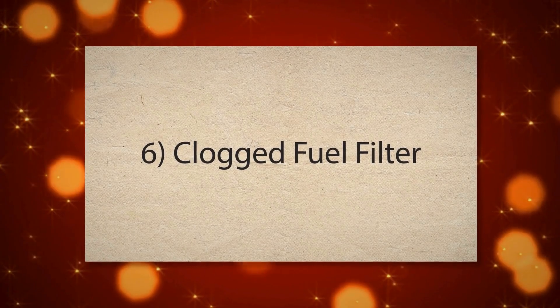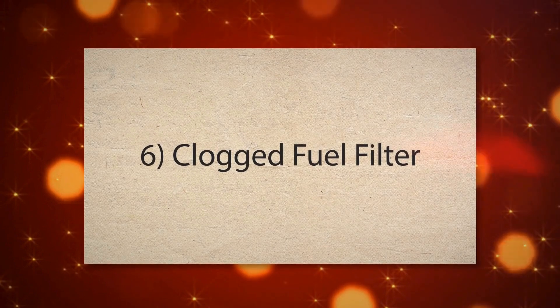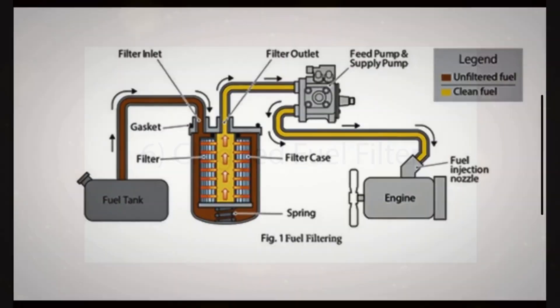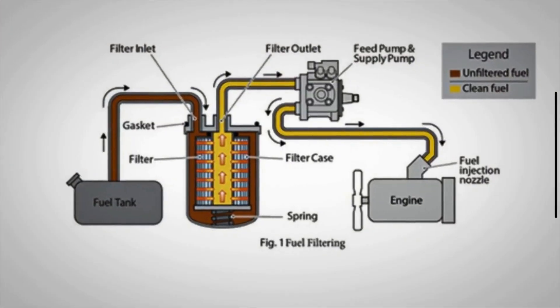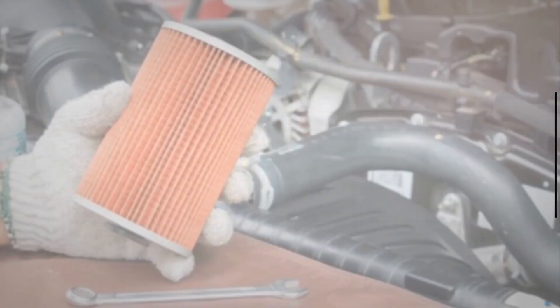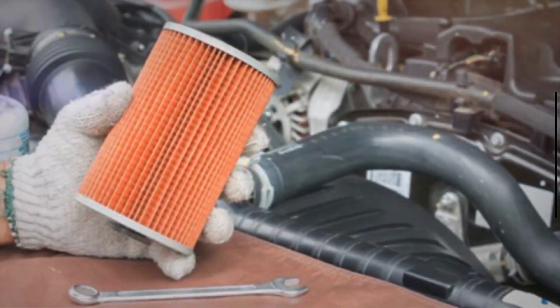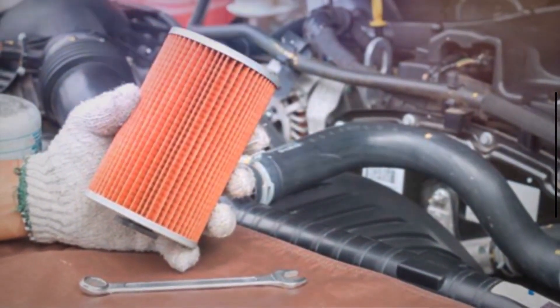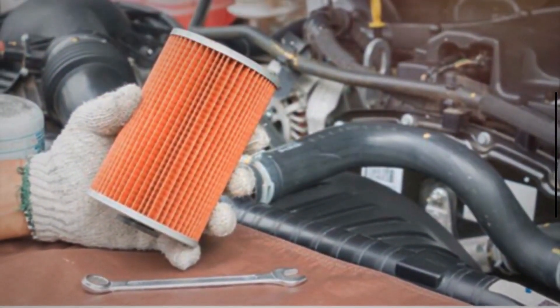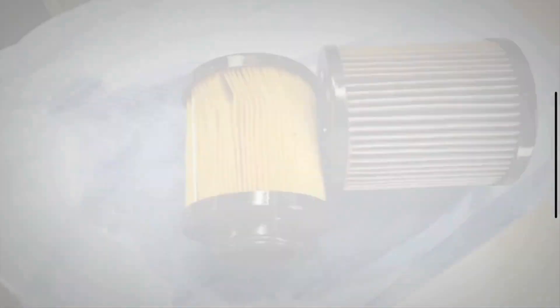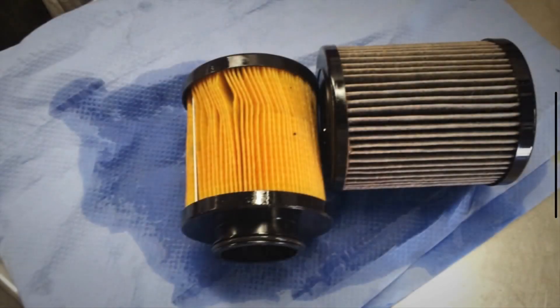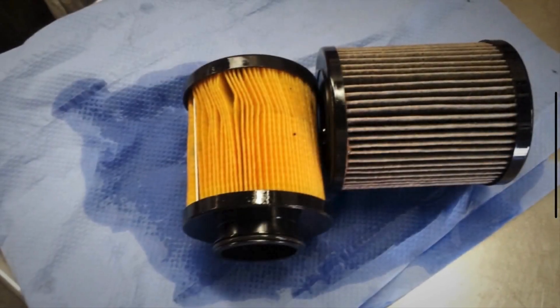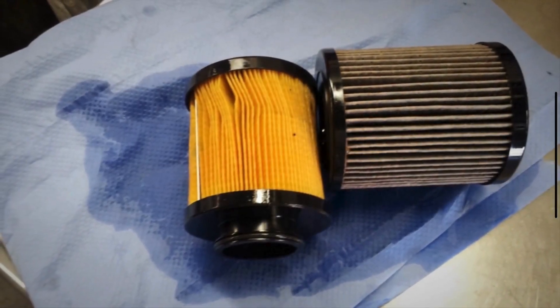The sixth cause is a clogged fuel filter. A clogged fuel filter restricts the flow of fuel to the engine, which can cause a lean condition. If Cylinder 2 receives less fuel than required, it can misfire, triggering the PO302 code.